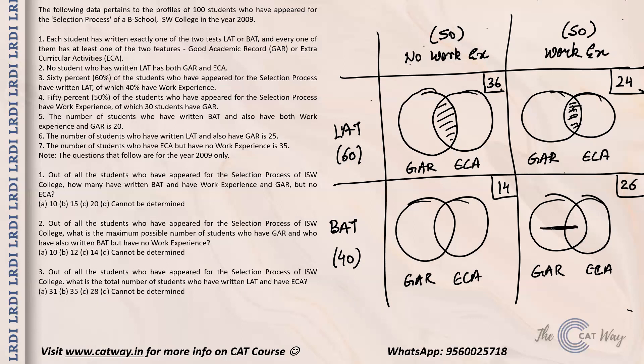Let's call the BAT, work experience, GAR portion x, making the BAT, work experience, ECA portion 20 minus x. Since the total GAR with work experience is 30 and the BAT portion accounts for 20 of those, the LAT, work experience, GAR portion is 10. The number of students with LAT and GAR is given as 20 total, so with 10 in the work experience row, the LAT, no work experience, GAR portion is 10, leaving 15 as no wait — let's continue solving.